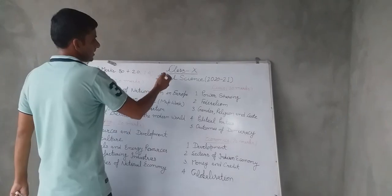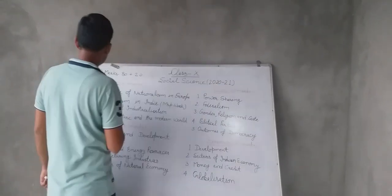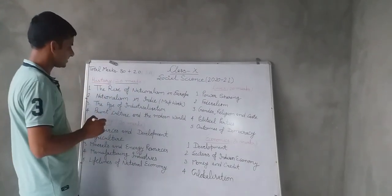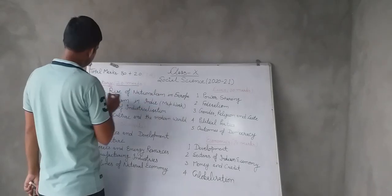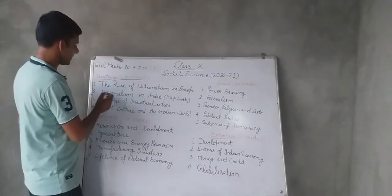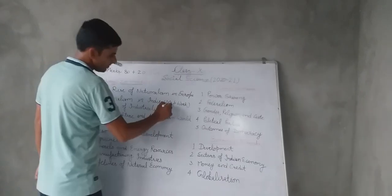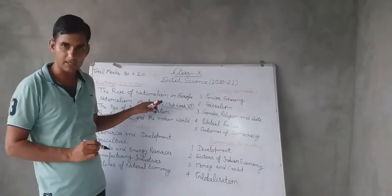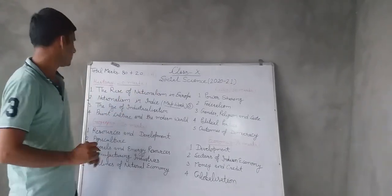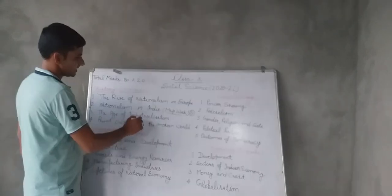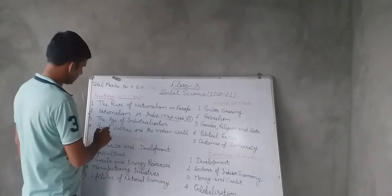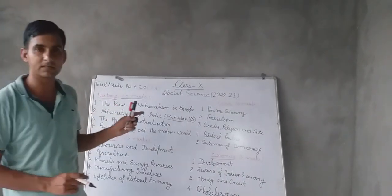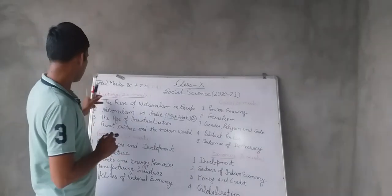We have written here: Class 10 Social Science 2020-21. First we will discuss history, which will be of 20 marks. There are four chapters in history: first, The Rise of Nationalism in Europe; second, Nationalism in India — map work of three marks will come from this chapter; third, The Age of Industrialization; and fourth, Print Culture and the Modern World. These four chapters will be covered for the annual examination.